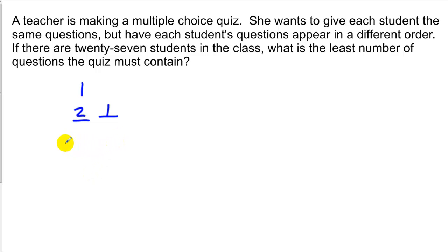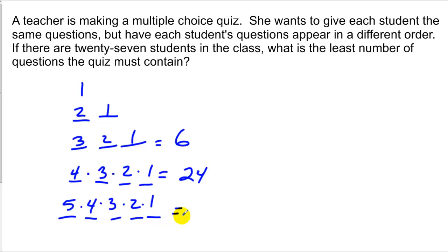If I had three questions, I could make 3 times 2 times 1 tests, which gives me a total of 6. I'm getting close, so if I had five questions, and chose all of them, and put them in order on a piece of paper, I could have a total of 120 tests. This will certainly cover a class of 27. So basically, the answer for this would be five questions.